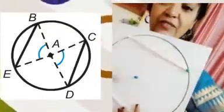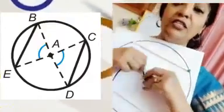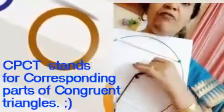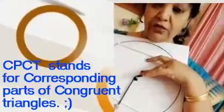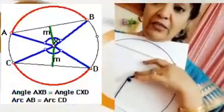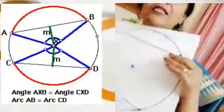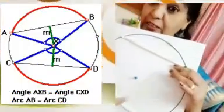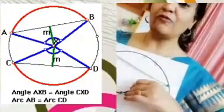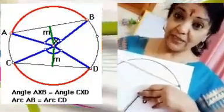The next important concept about chords is very useful for solving problems. If you draw a perpendicular distance from the center to the chord, and then measure the distance from one endpoint of the chord to the foot of the perpendicular and from the other endpoint to the foot, you will find an important property: it bisects the chord. For example, if the chord is 8 centimeters, drawing a perpendicular from the center divides it into 4 centimeters and 4 centimeters. We can apply congruence of triangles here — constructing one triangle on each side — and by CPCT we get that the perpendicular bisects the chord.